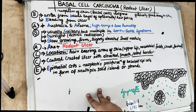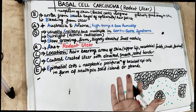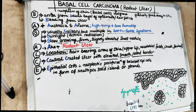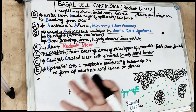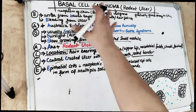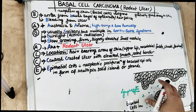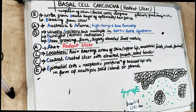So to summarize, basal cell carcinoma, also known as the rodent ulcer, arises from the basal layer of the epidermis or hair follicle. It is usually seen in geographic areas with high temperature and low humidity. It is usually a solitary ulcer but can be multiple in cases of Gorlin-Goltz syndrome. Etiology includes sunlight and actinic radiation. It is a slow growing, firm, slightly elevated small nodule with a central crusted ulcer, rolled-out smooth borders, located in hair-bearing areas of the face. Histopathologically, it is characterized by neoplastic proliferation of basaloid epithelial cells in the form of multiple solid islands or strands of epithelium.